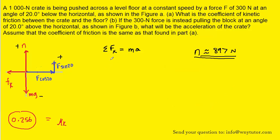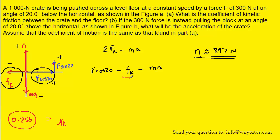We turn next to the sum of the forces in the x direction. We have F cosine 20, pointing to the right and therefore positive, and the kinetic frictional force pointing to the left and therefore negative. Recall that Fk can be replaced with mu k multiplied by the normal force. We have practically every known value: F, mu k from our previous calculation, and the normal force we just found.